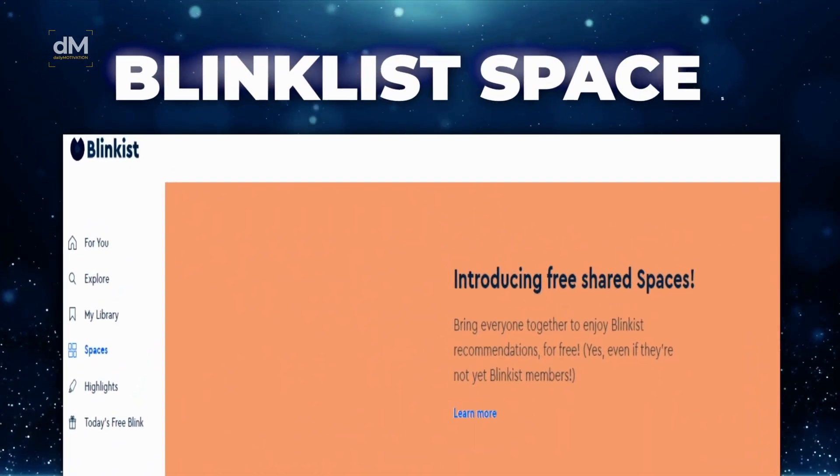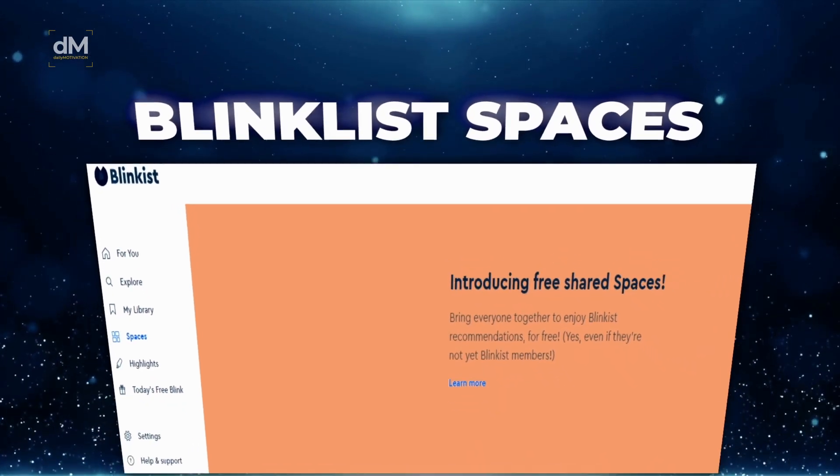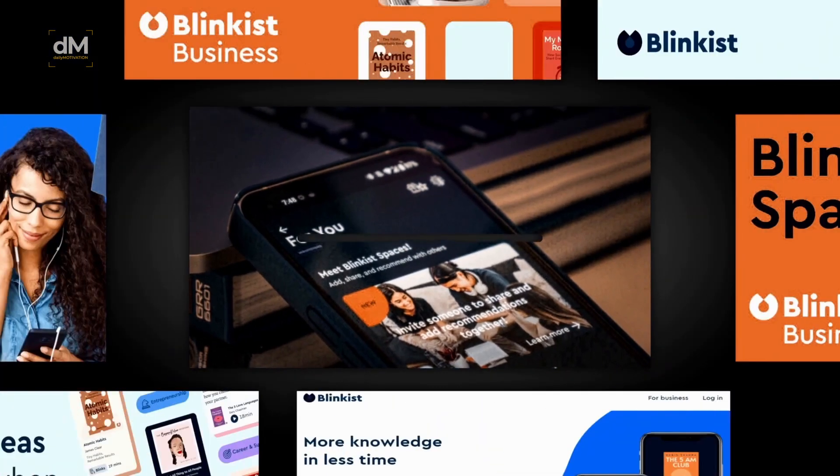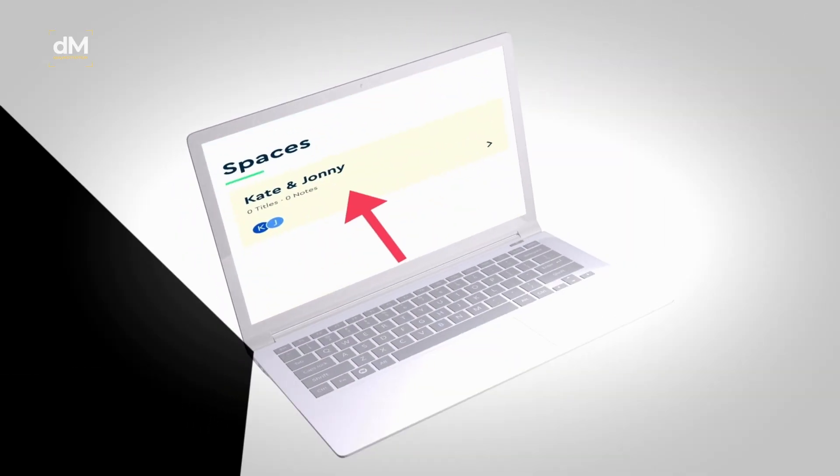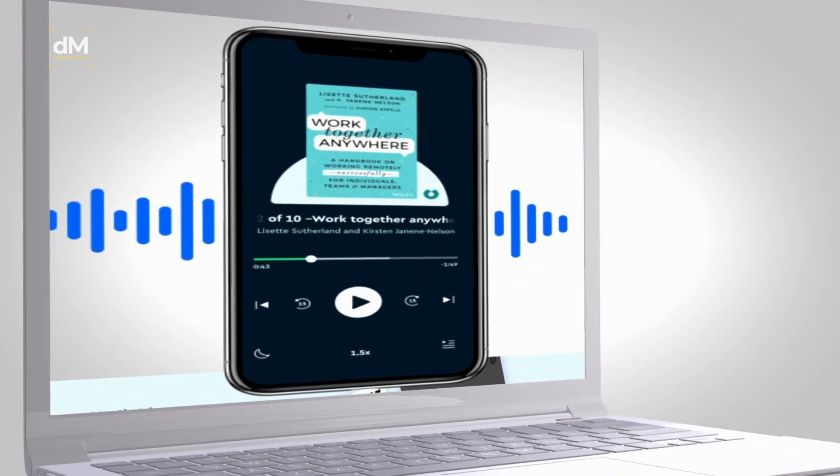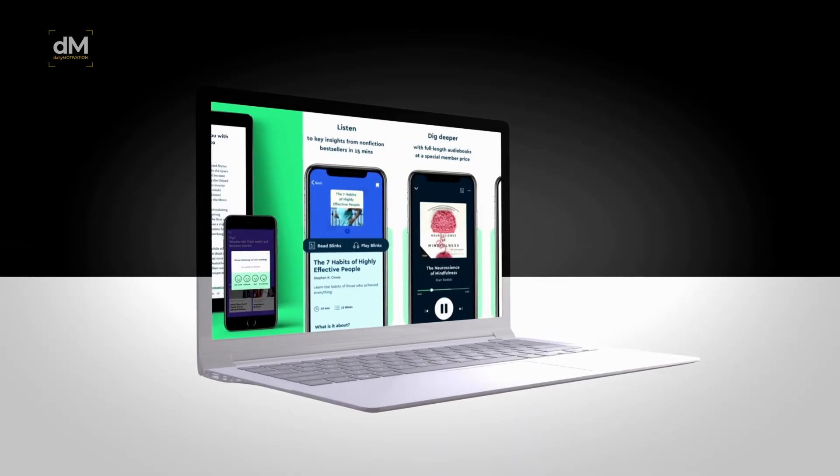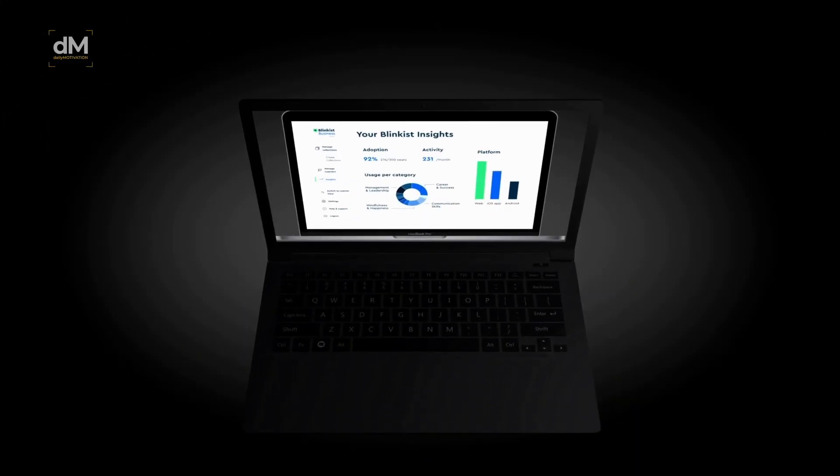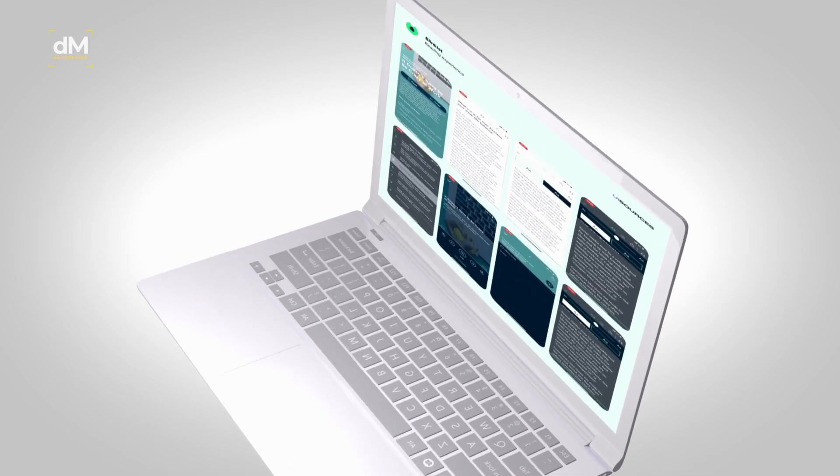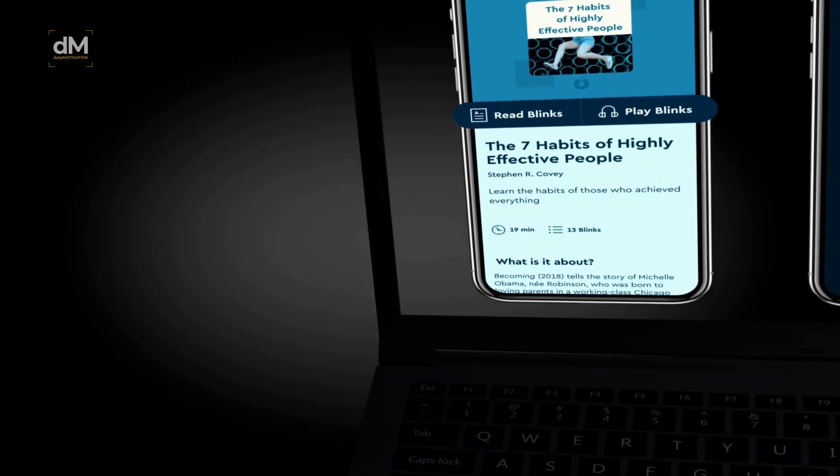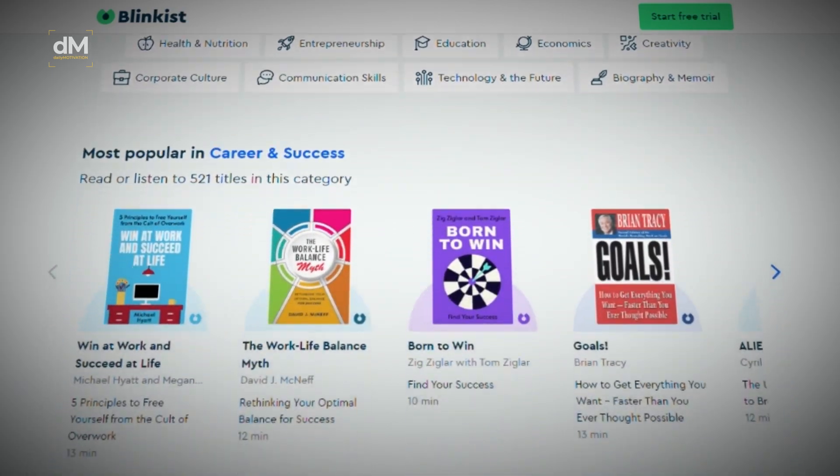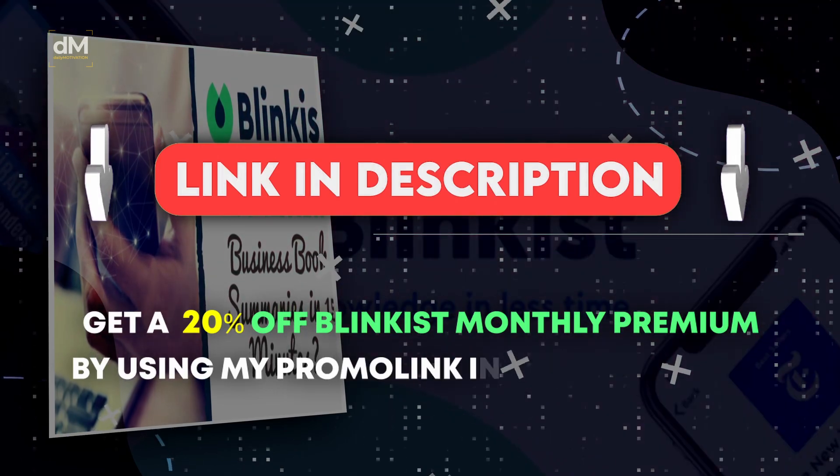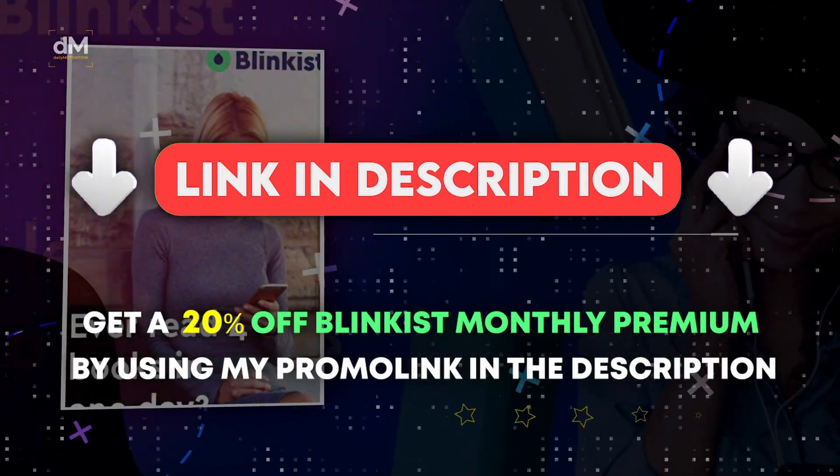One of the best things about Blinkist is the new feature Blinkist Spaces. This feature allows you to create a space with friends or family where you can recommend titles to each other. All members of a shared space can access all titles in the space with or without a Blinkist premium subscription. No time to read the whole book? No problem. Blinkist gives you the book's essence in both text and audio format, perfect for a quick recap or in-depth understanding on the go. Make this year about growth, exploration, and the joy of reading. Get a 20% off Blinkist monthly premium by using my promo link in the description. Let's get back to the video and continue this adventure.